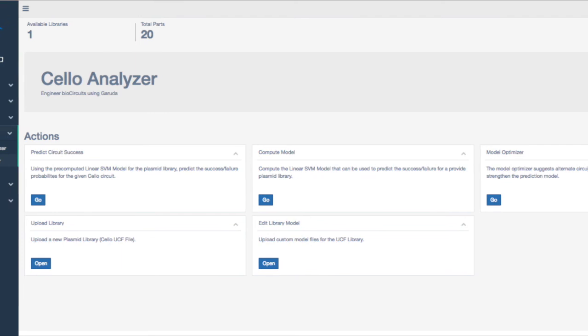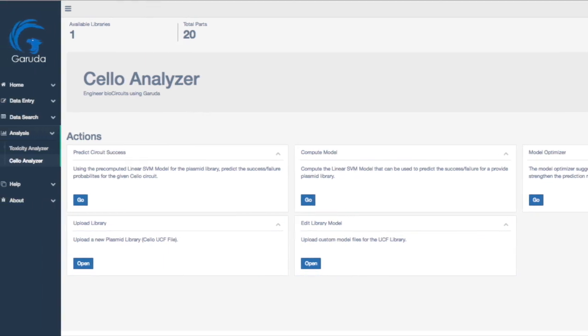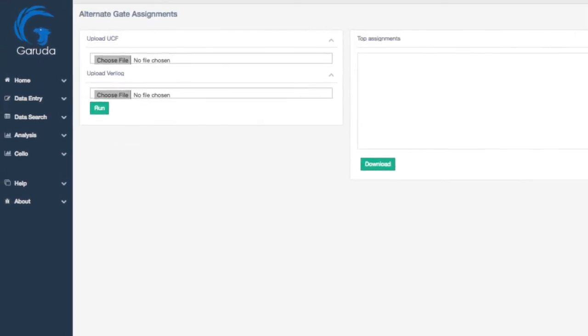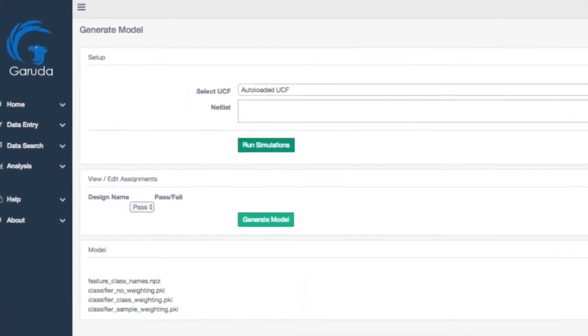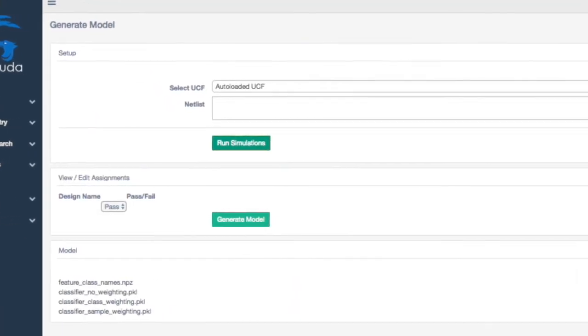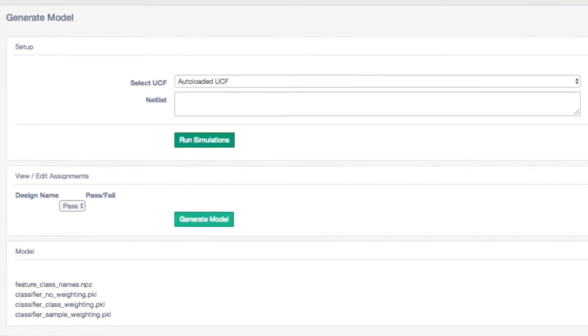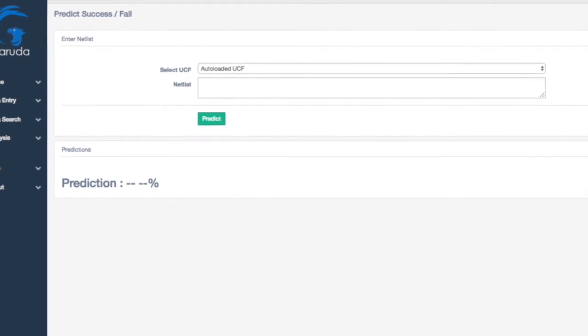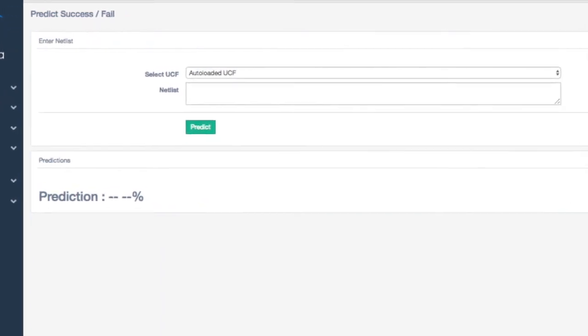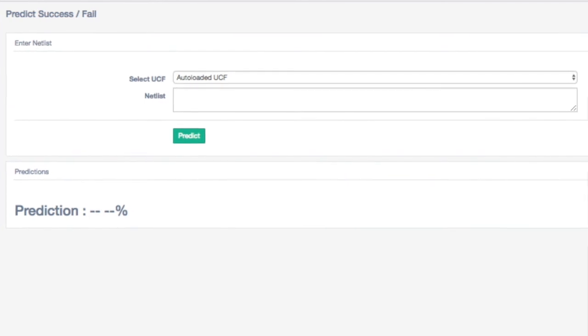Using the Cello analyzer through Garuda, a user will be able to first generate multiple designs for the same Verilog file. It will be able to train a machine learning model using wet lab information from real experiments. And it will be able to use the predictive model to check whether a particular design is expected to work or not.